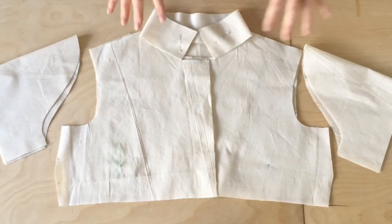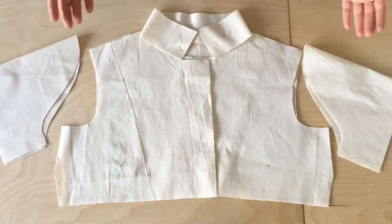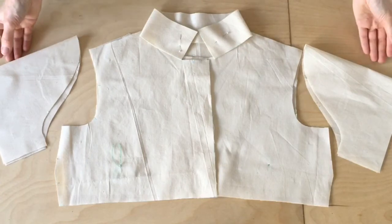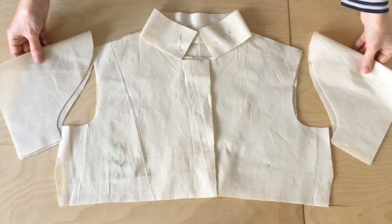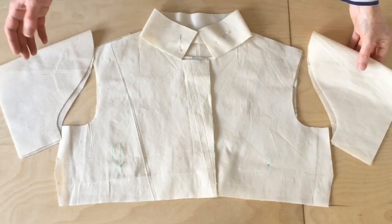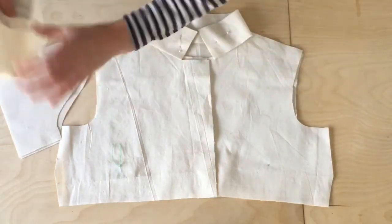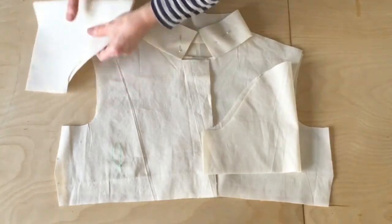Before you start to sew it's a really good idea to lay all of your pieces together and acknowledge what pieces you've got and how they're going to go together. Particularly important is with items such as sleeves - you'll have two sleeves and it is so easy to end up with two right sleeves. So really good practice is to fold those sleeves in half.